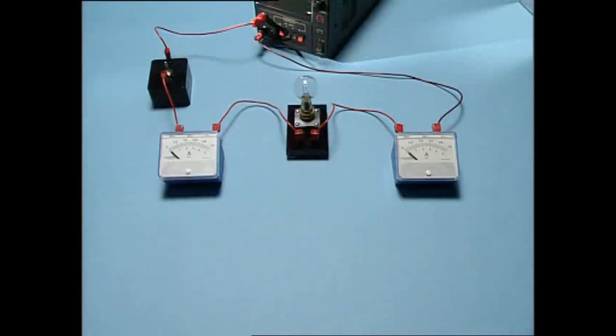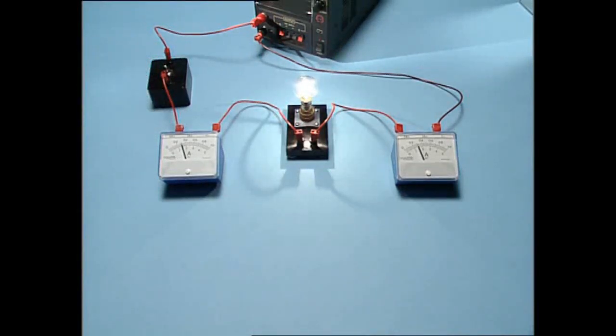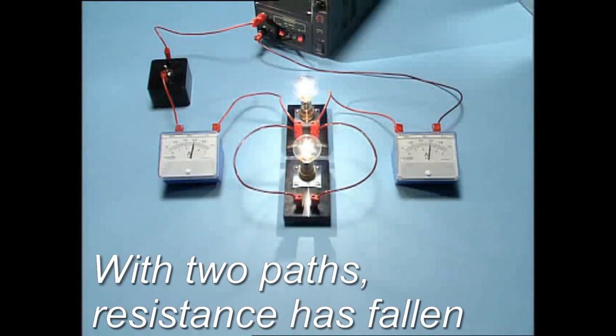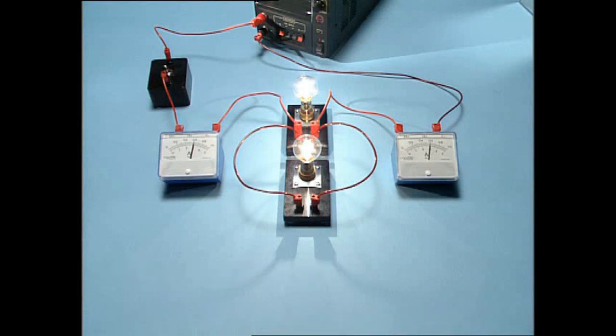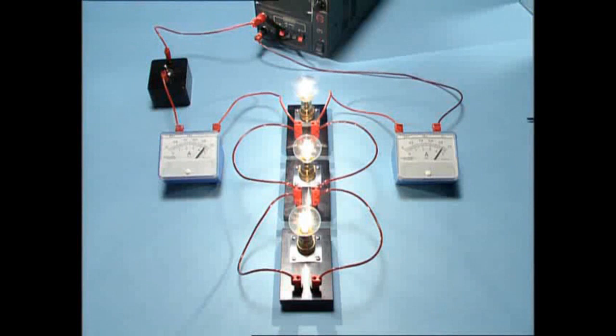To investigate current in a parallel circuit, consider our circuit with one bulb. This time, the current leaving the supply is 1.5 amps, and the current returning is also 1.5 amps. Watch the ammeters carefully as a second bulb is added. The total current has doubled to 3 amps. Because the bulbs are equally bright, each bulb is taking 1.5 amps. Adding a third bulb results in 3 times the current of a single bulb. The total current is 4.5 amps. Each bulb has its own path to take current directly from the supply. That's why bulbs in parallel are equally bright.